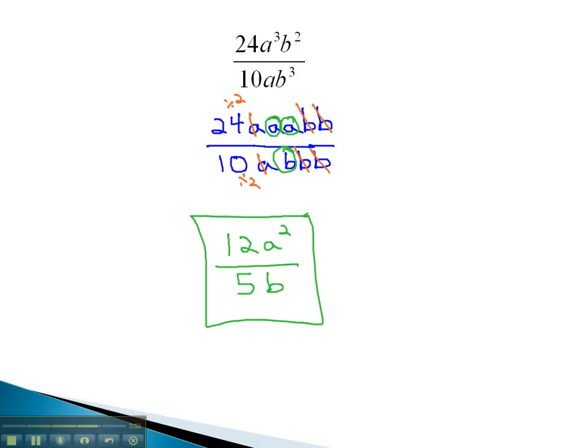We can reduce by writing the exponents as a product and dividing out our common factors.